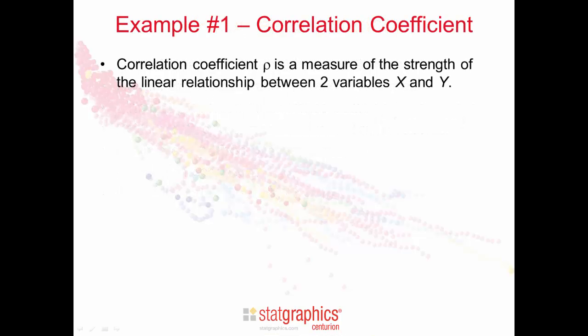The first example I'm going to talk about concerns the correlation coefficient. The correlation coefficient rho is a measure of the strength of the linear relationship between two variables, X and Y.